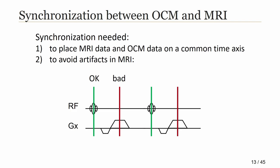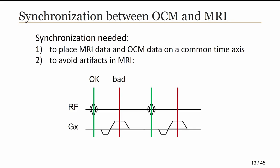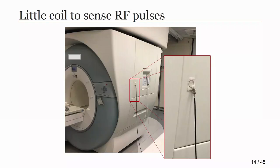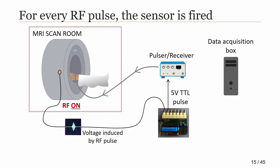It's important to synchronize those two streams of data so that both the MRI and the OCM data are on the same time axis, enabling joint reconstruction. We also want to avoid artifacts in MRI — if we were to fire the sensor during a readout window, that would create artifacts. So what we do is detect the RF pulse, and that's when we fire the sensor. We detect the RF with a small coil placed on the outside of the scanner; when an RF pulse is sent, we detect the weak signal, which gets converted through a pulse receiver into a TTL pulse that triggers the sensor. The pulse receiver then switches to receive mode and passes the returning signal to the data acquisition system.